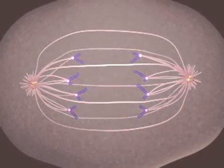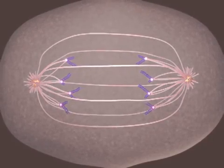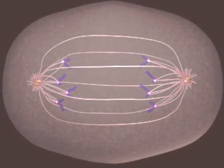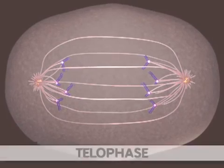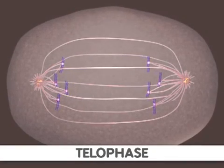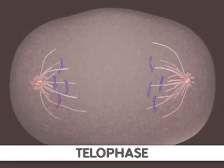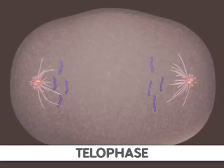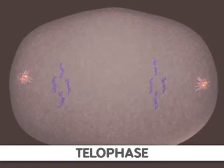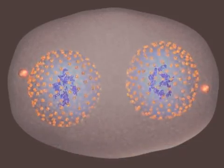Telophase is the final stage of mitosis. It is here the components of the new cells begin to appear. At this point, the spindle fibers are broken up. A new nuclear membrane surrounds the chromosomes at the end of each cell, and the chromosomes uncoil and return to an uncondensed state. Mitosis is now complete.